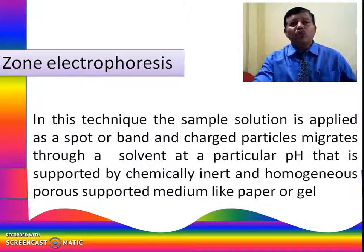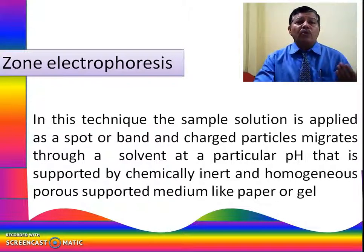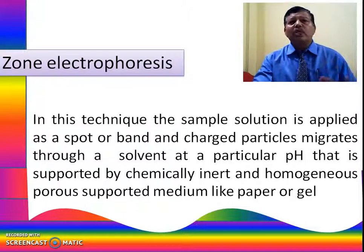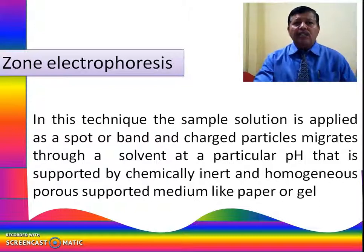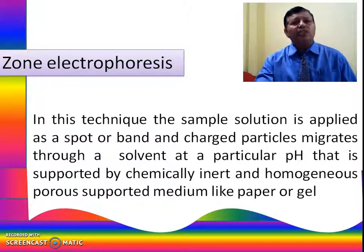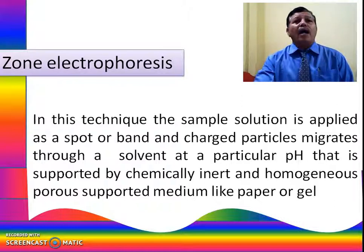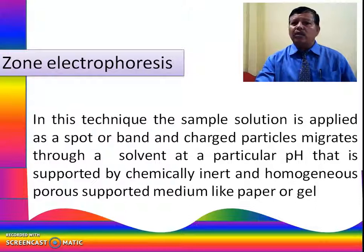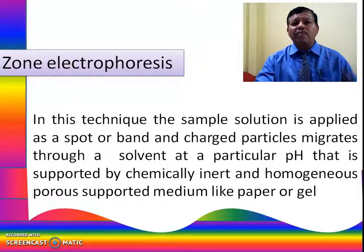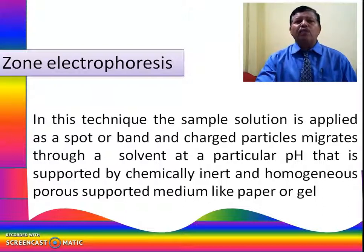In zone electrophoresis, the sample solution is applied as a spot or band, and charged particles migrate through the solvent at a particular pH supported by a chemically inert and homogenous porous medium like paper or gel.